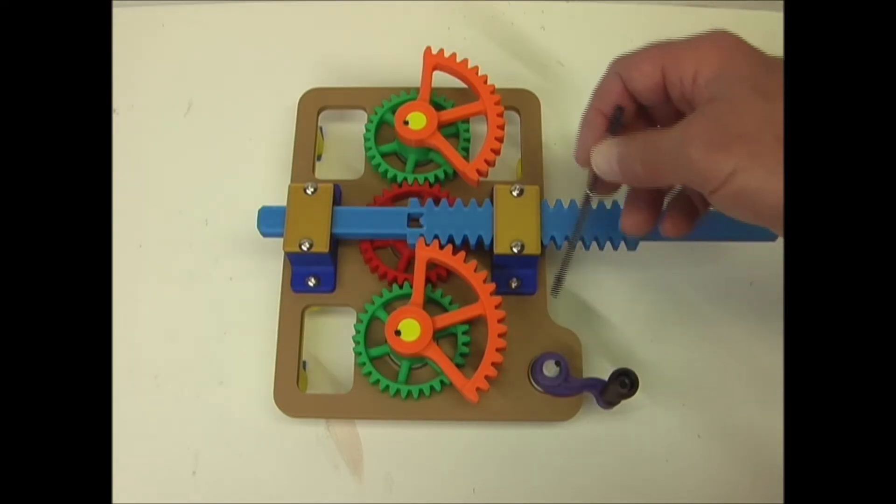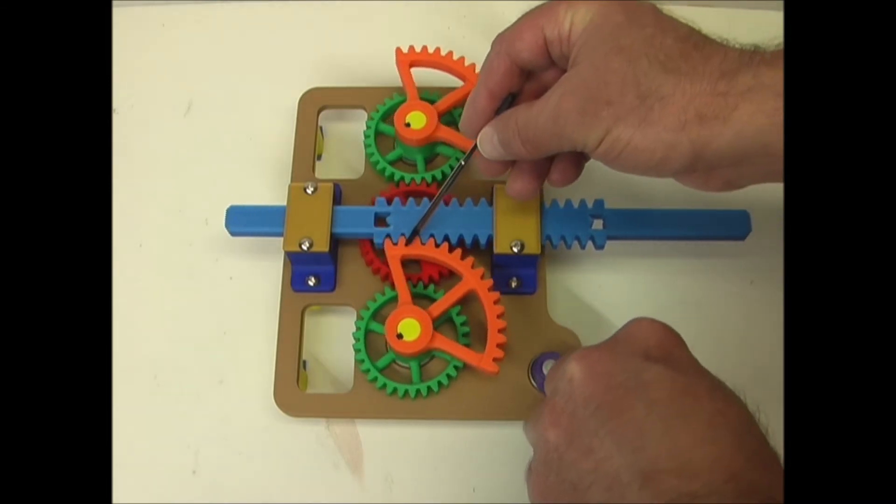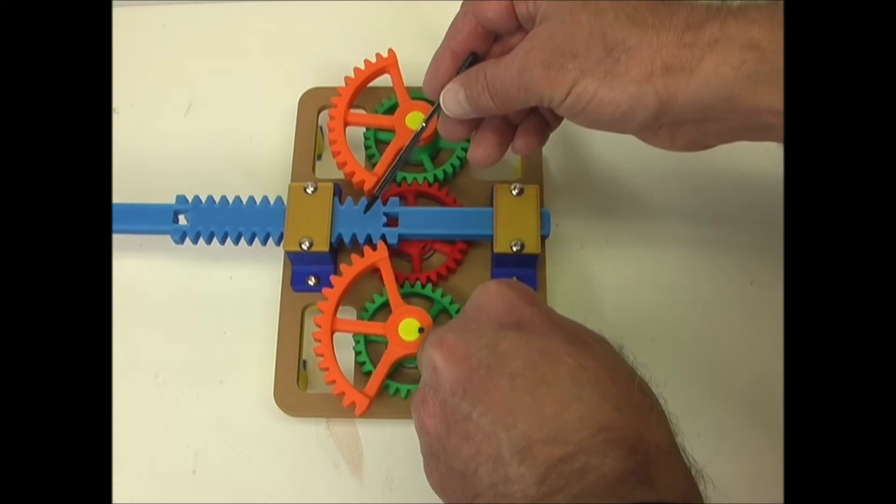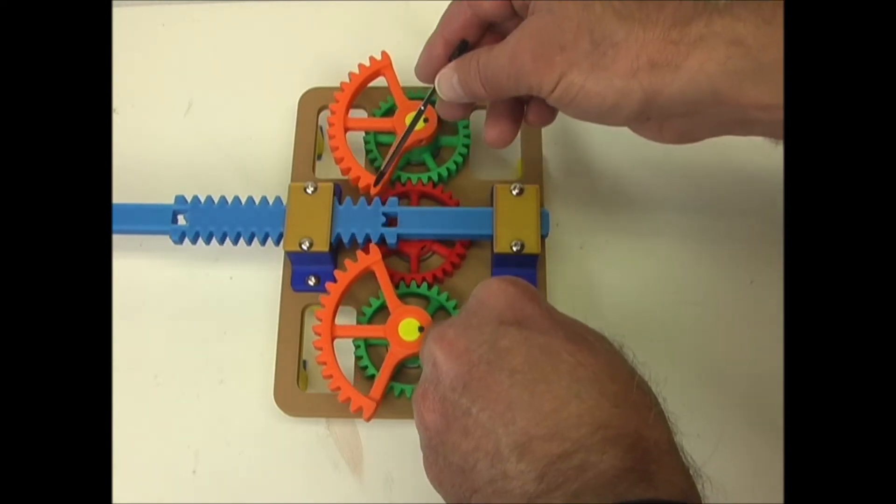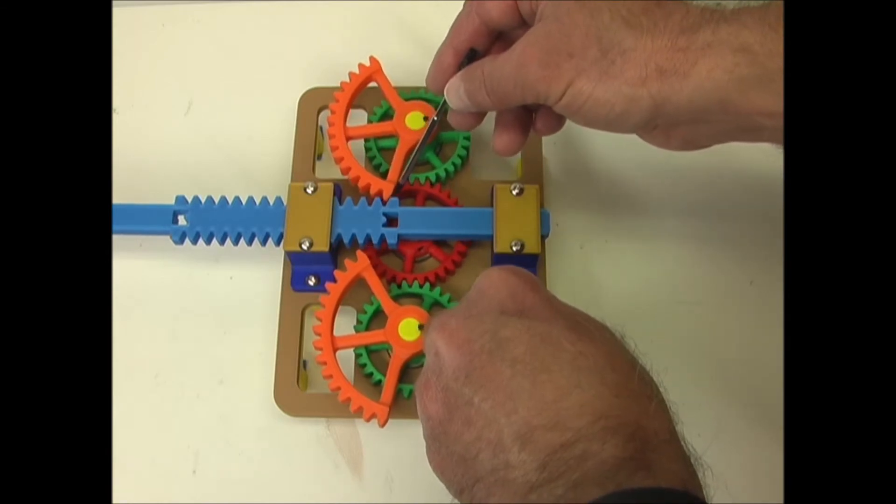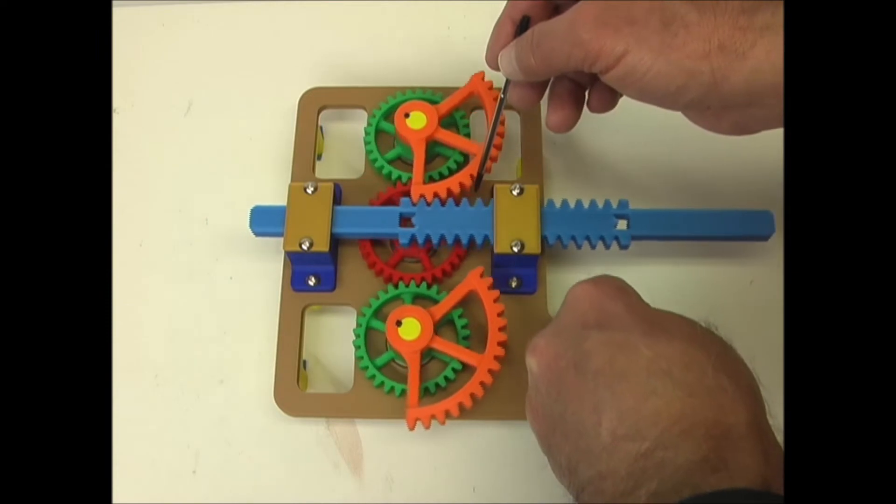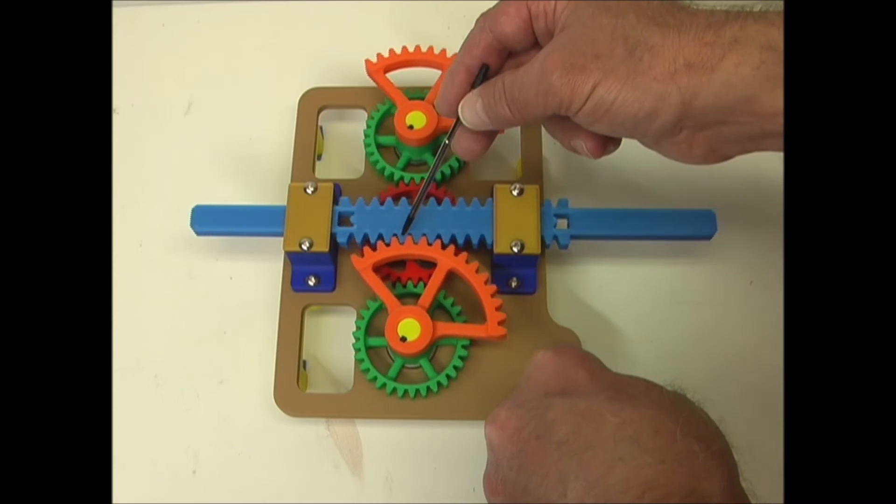So I turn the crank, you can see that this pinion engages with the rack, pushing it to the left. And at the end, it disengages here, and the other side engages with the rack, pushing it back to the right. And then this one pushes it back to the left again.